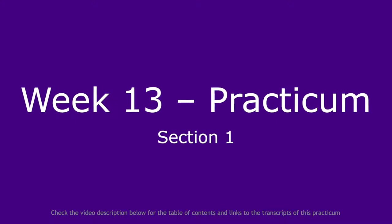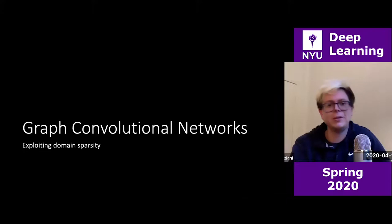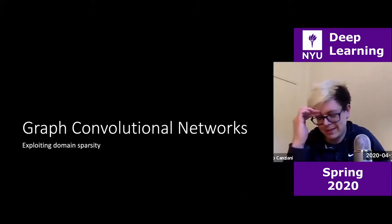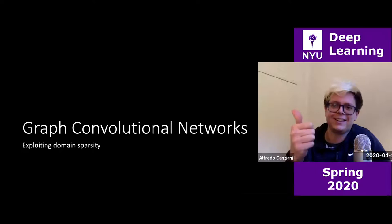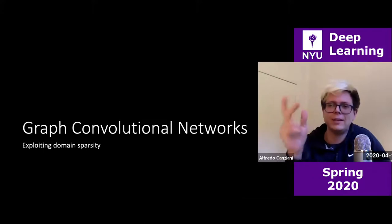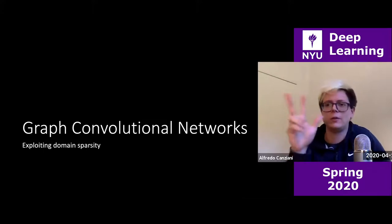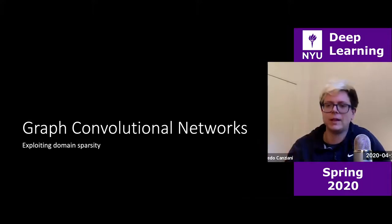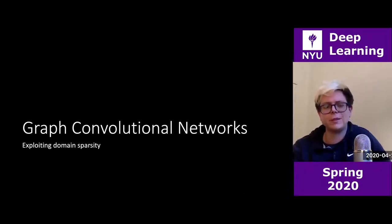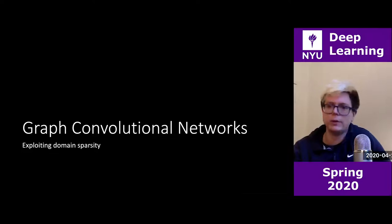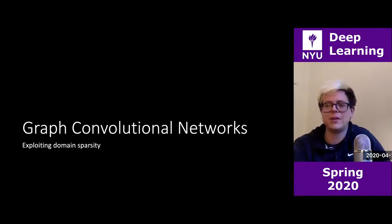So what are we talking about today? Graph convolutional networks — exploiting domain and sparsity. Yesterday we saw the three properties of natural signals: locality, stationarity, and compositionality. Graph convolutional networks are another type of architecture — another way of exploiting the structure of your data.